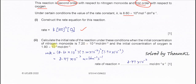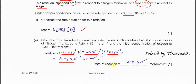Part 2: calculate the initial rate of the reaction when the initial concentration of NO is 7.2 × 10⁻⁴ mol dm⁻³ and the initial concentration of O₂ is 1 × 10⁻³ mol dm⁻³. Because K and both concentrations are given, substitute them into the rate equation. The result is 8.47 × 10⁻³ mol dm⁻³ s⁻¹.